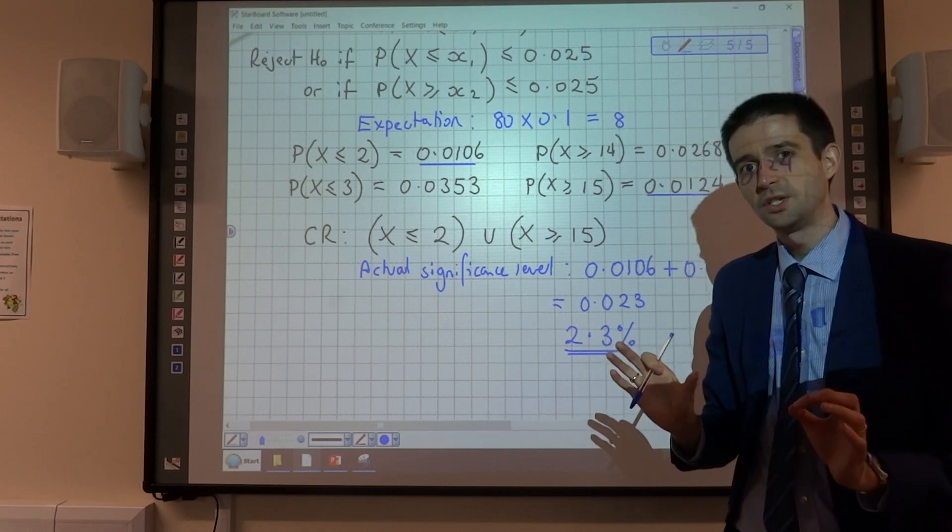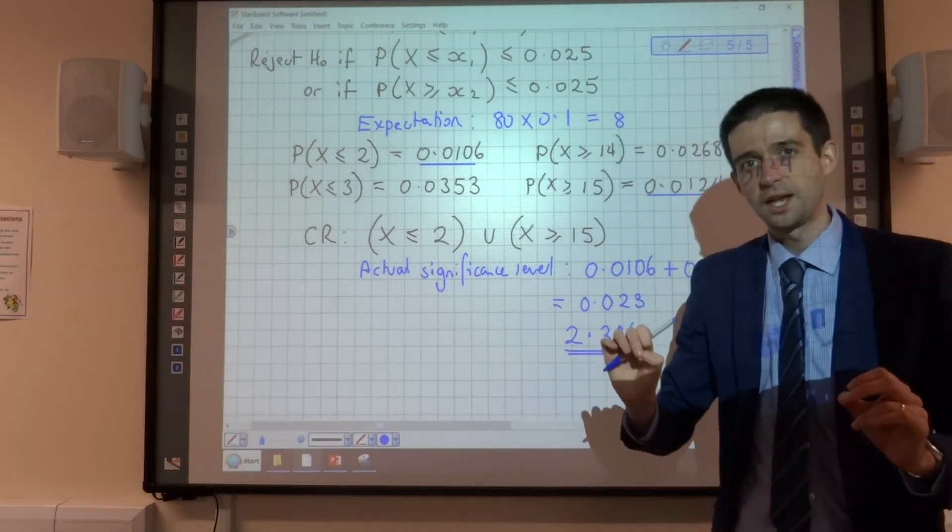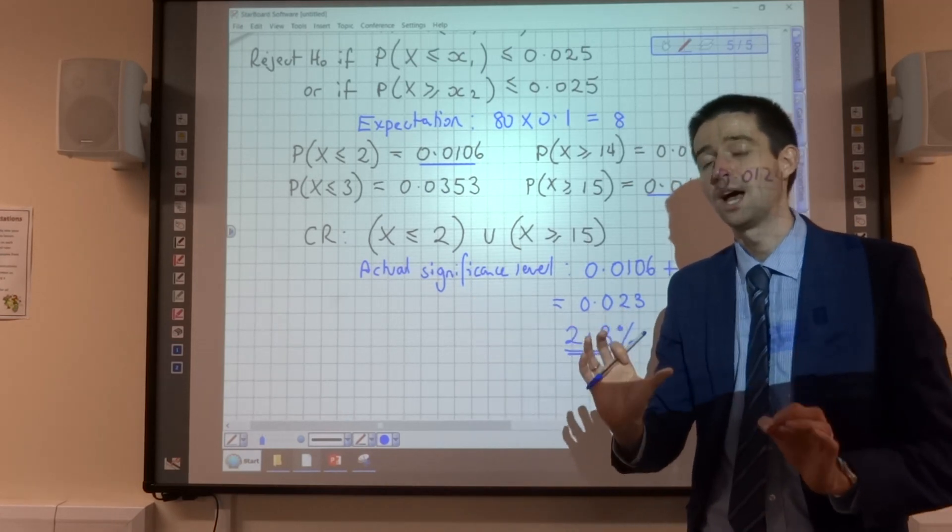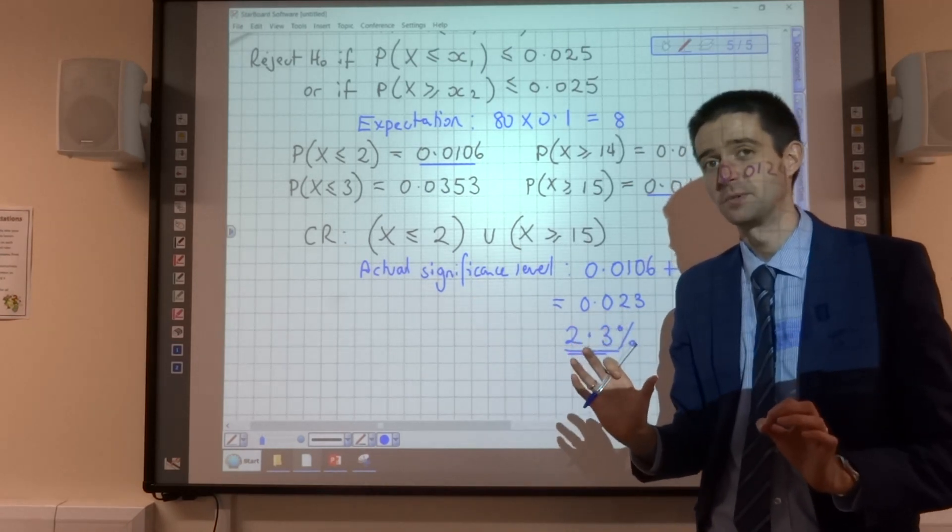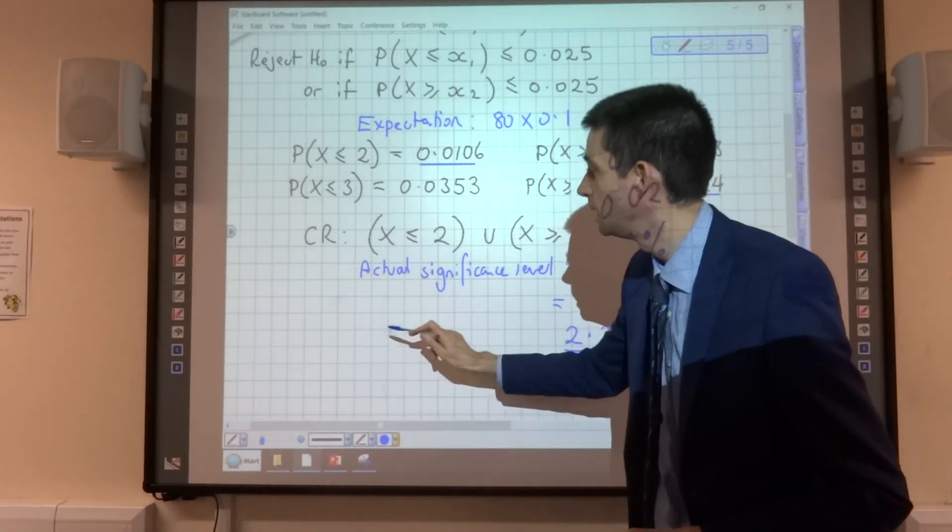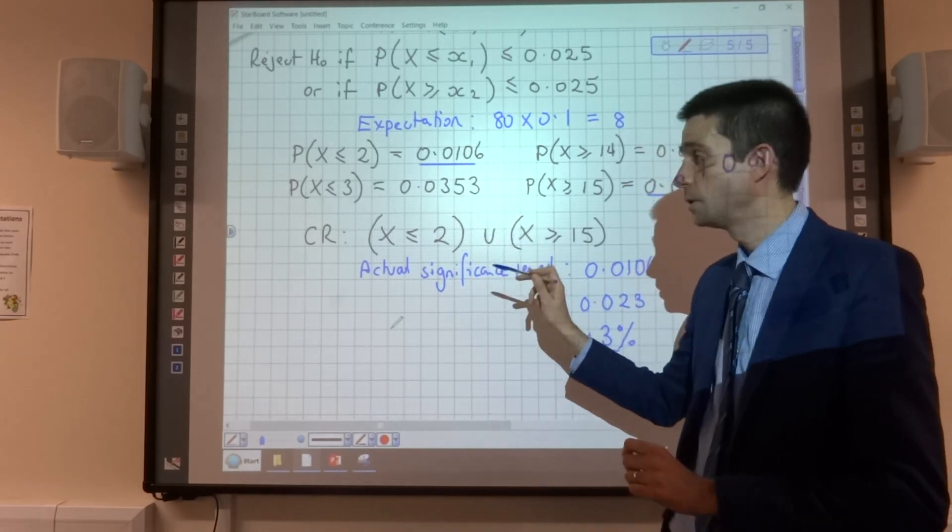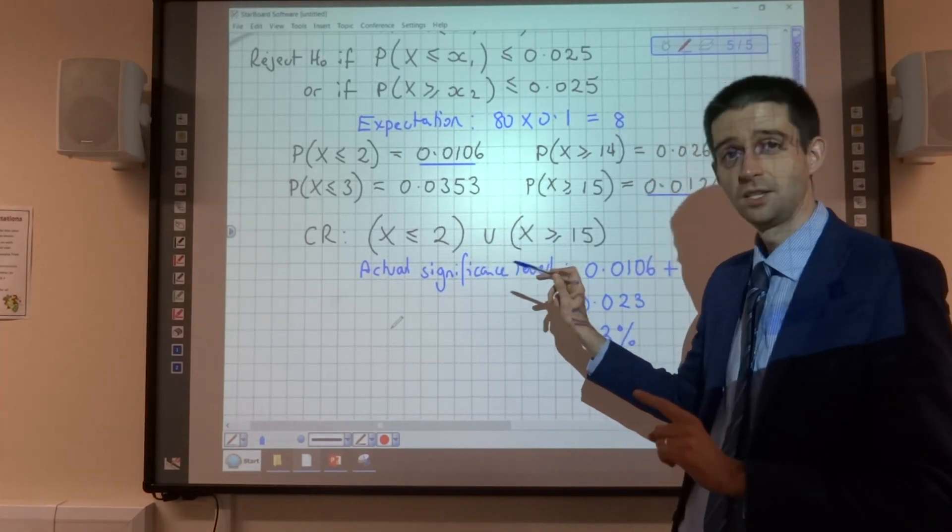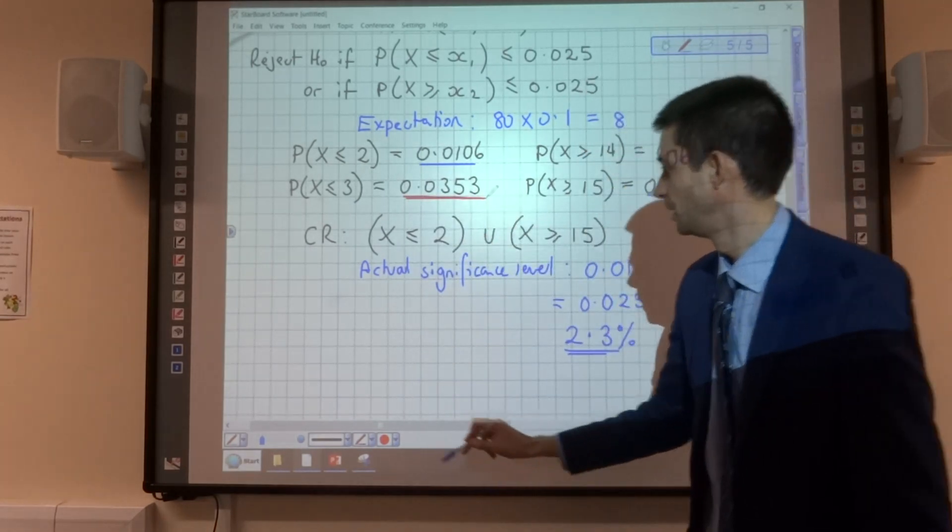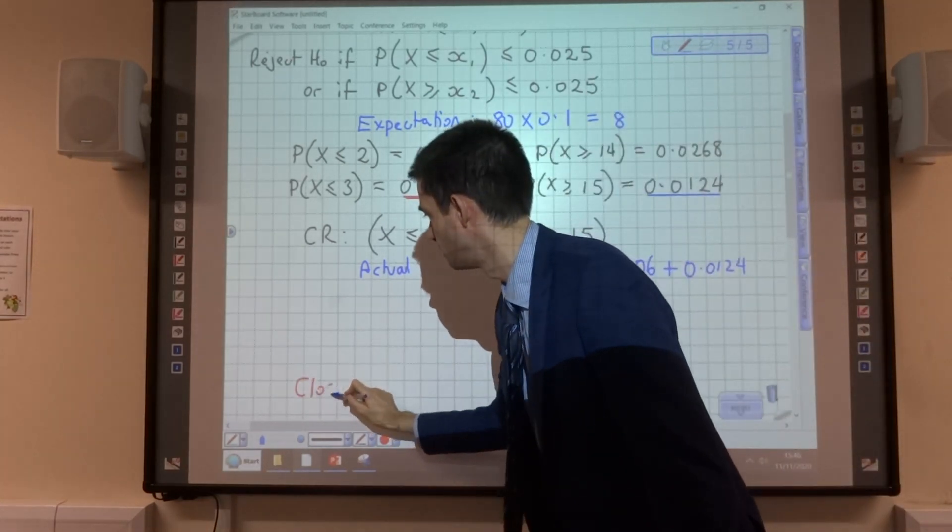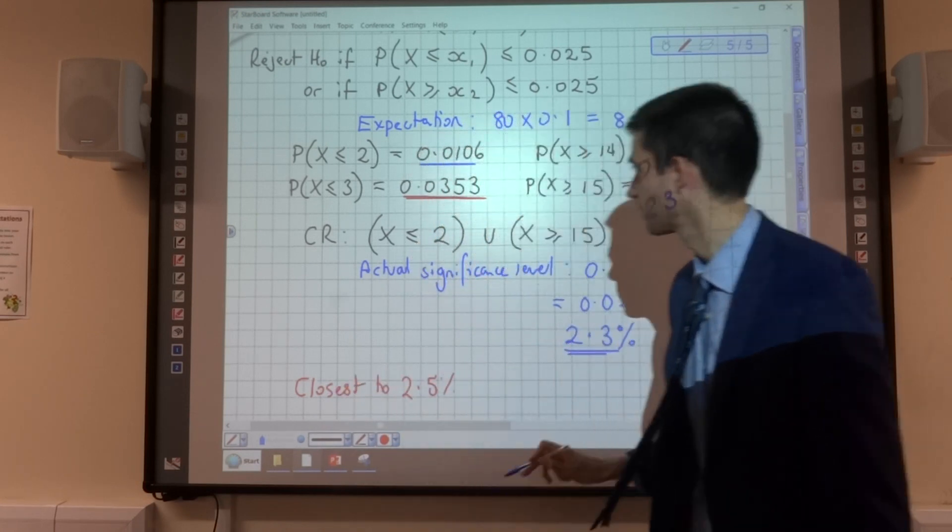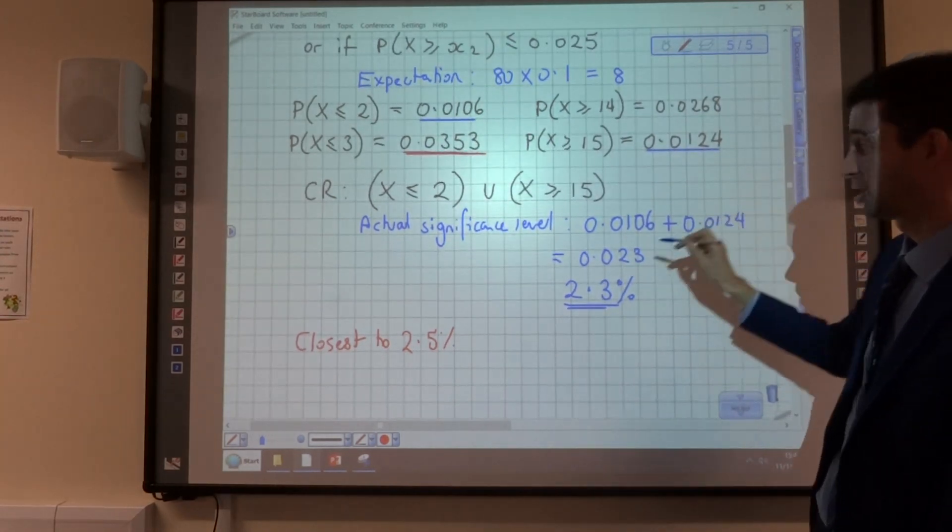Sometimes the wording of the question is slightly different, and rather than saying you have to be less than 2.5% in each tail, it says you have to be as close as possible to 2.5%. Now, if that was the case, in both of these scenarios here, the other result is actually closer to 2.5% than the one that we've used.